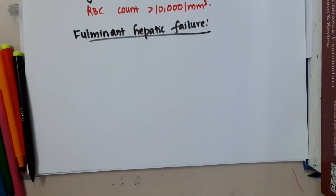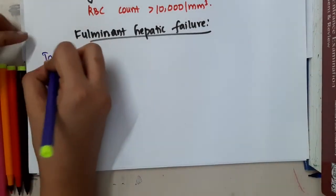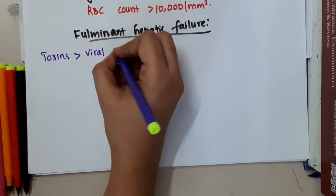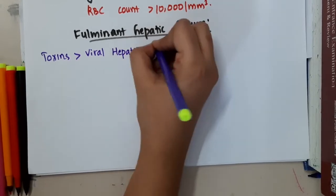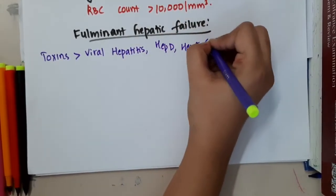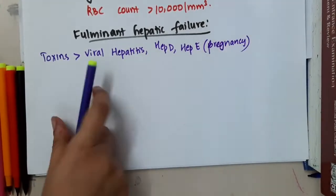Let us now learn some important points about fulminant hepatic failure. So what do you see in fulminant hepatic failure? In fulminant hepatic failure, toxins are more responsible than viral hepatitis, which can be hepatitis D and hepatitis E, especially in pregnancy, is associated with fulminant hepatic failure.